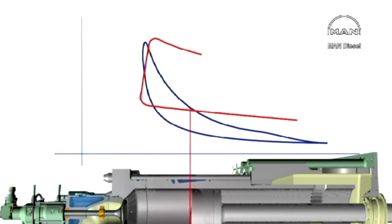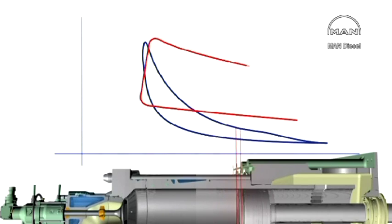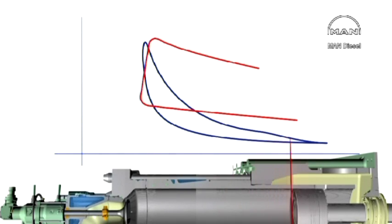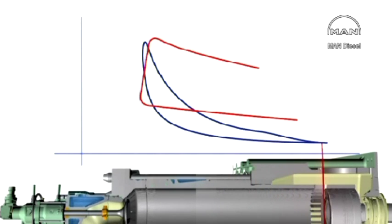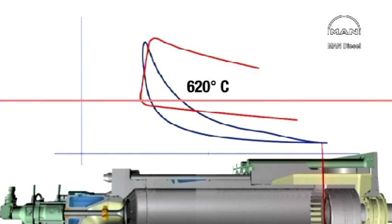Combustion takes place so quickly, however, that there's no time for the high temperature to be transferred to the cylinder wall. The temperature of the metal surfaces will not exceed the mean temperature of the process, about 620 degrees centigrade. Then again, the cylinder's made of cast iron, which begins to lose its strength at already around 300 degrees centigrade.